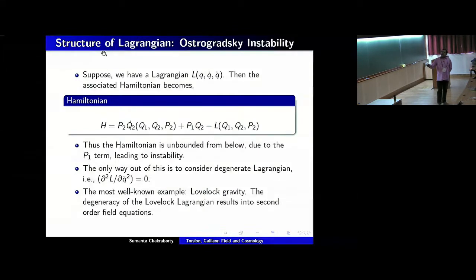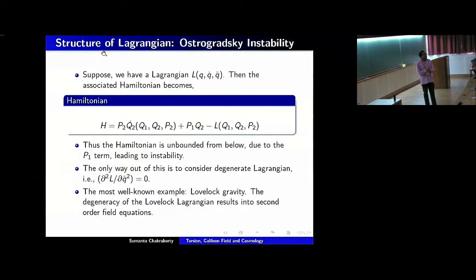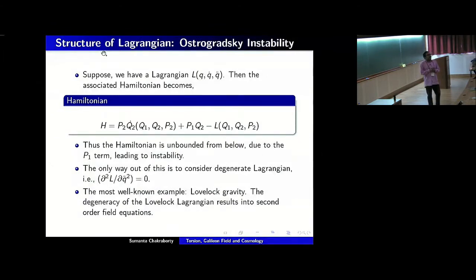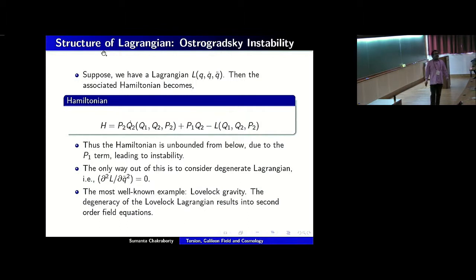We cannot have a term depending on double derivatives in the Lagrangian — with one caveat. The caveat is that you can construct Lagrangians that are degenerate, in the sense that the double derivative of the Lagrangian with respect to Q-double-dot is zero. The most familiar example is Lovelock gravity in general, or our Einstein-Hilbert action in GR. In the Einstein-Hilbert action, the Ricci scalar describes the dynamics of gravity and depends on double derivatives of the metric, but Einstein's equations are still second order. The double derivative appears only linearly, so the double derivative of the Lagrangian with respect to the double derivative of the metric vanishes, and we have well-behaved solutions.